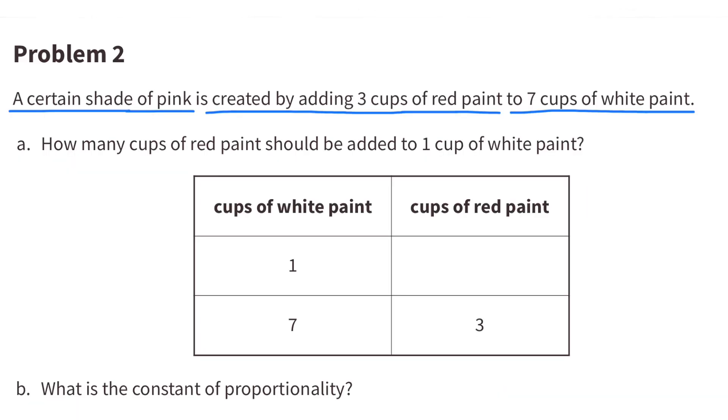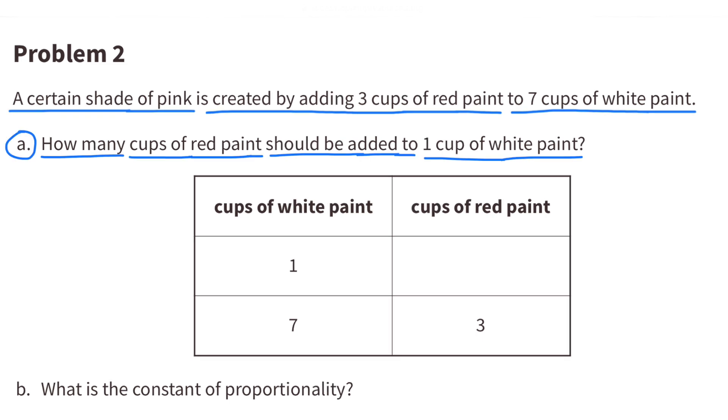Number 2. A certain shade of pink is created by adding 3 cups of red paint to 7 cups of white paint. A. How many cups of red paint should be added to 1 cup of white paint?